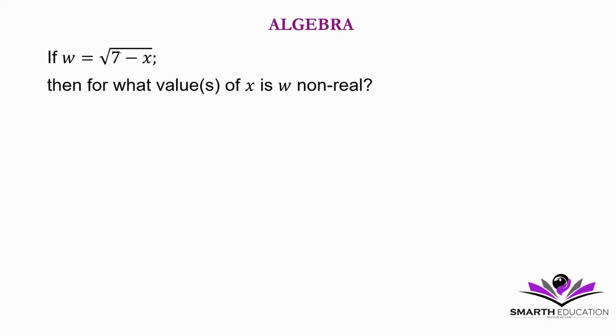So this would be non-real if this is less than 0, if this is negative. Remember, the square roots of negative numbers are non-real. So it means 7 minus x should be negative. And then negative means less than 0.